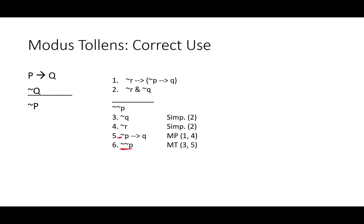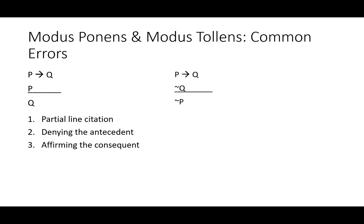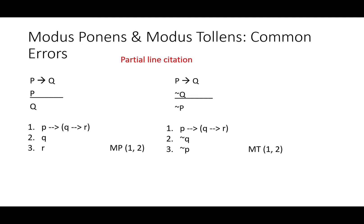Because these rules are so important and frequently used, there are quite a few common errors. The first type is citing only a partial line — we'll see how that works and how to avoid it. The next two common errors — denying the antecedent and affirming the consequent — are fallacies that involve mixing up modus ponens and modus tollens.